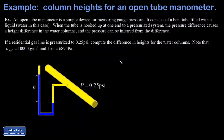In this video we're using a simple type of pressure gauge called an open tube manometer. This big yellow pipe is a gas line that's charged to 0.25 psi, and we'll have to convert that to pascals to make any progress. That's connected to this bent tube, which is our pressure gauge, and it has water inside of it.